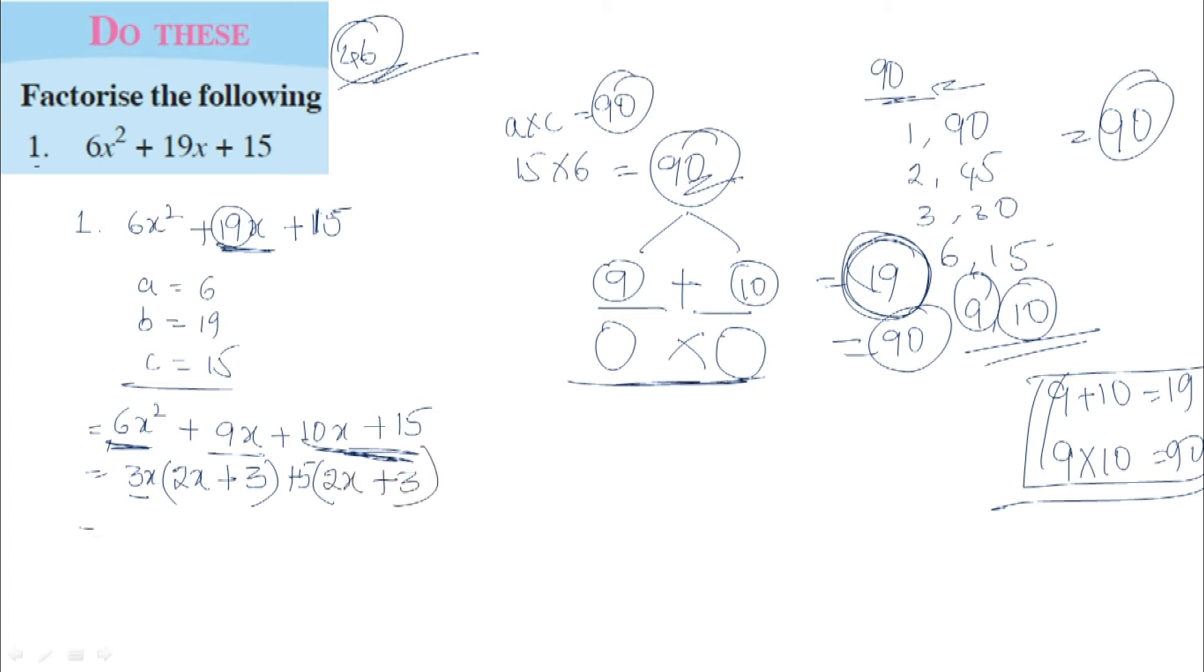So 2x + 3 appears in both terms. 2x + 3 is common, so we get (2x + 3)(3x + 5).